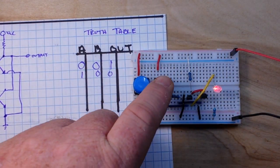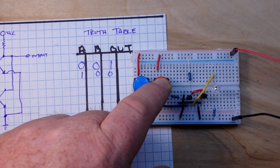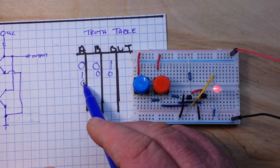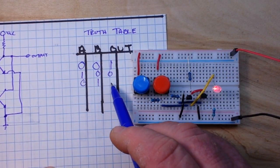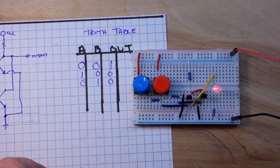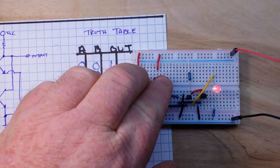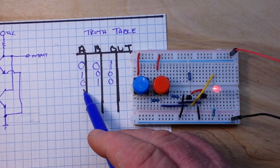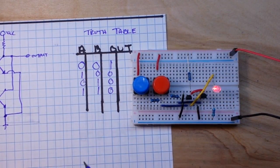Next we will have B true and A false. Is 0, 1, 0. And then both of them true. 1, 1, 0.